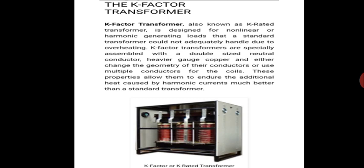The K-factor transformer is specially assembled with a double-sized neutral conductor. The transformer is configured in a delta-star connection. Because triplen harmonics cause excess neutral current, the neutral conductor must be double-sized to handle this excess current flow through the neutral to earth path.